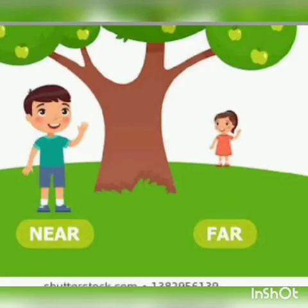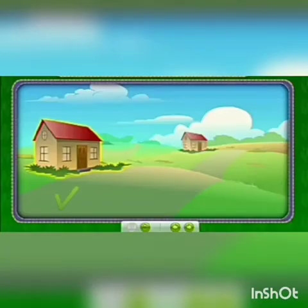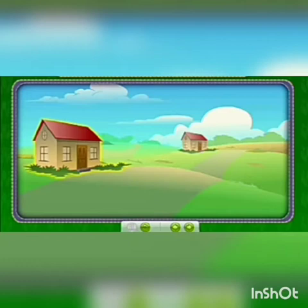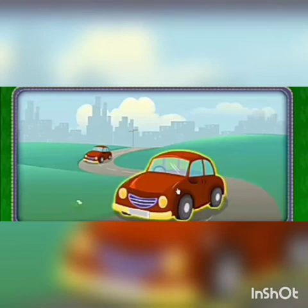Next, near or far. The boy who is under the tree is near and the girl standing on the right is far. In this picture, the hut with the right tick is near and another is far — or we can say the hut on the left hand side is near. The car on the right hand side is near and another is far.